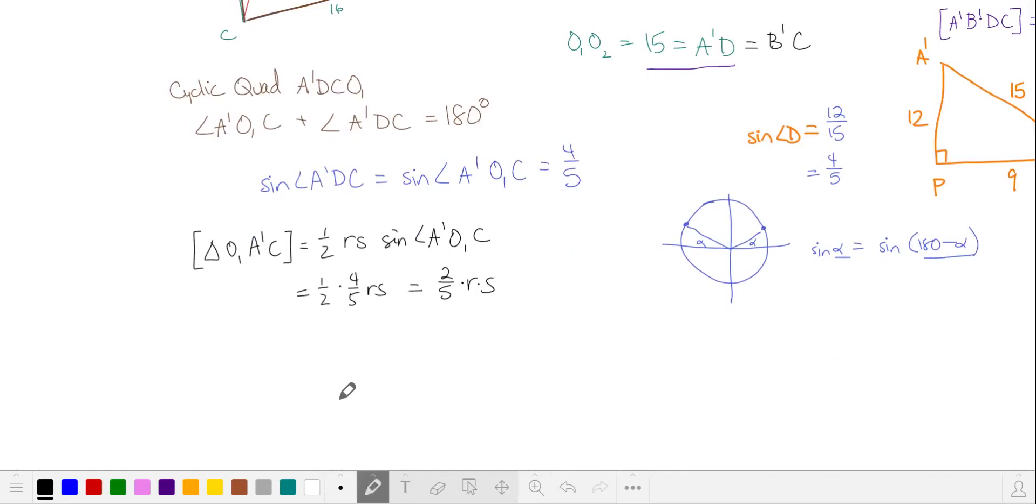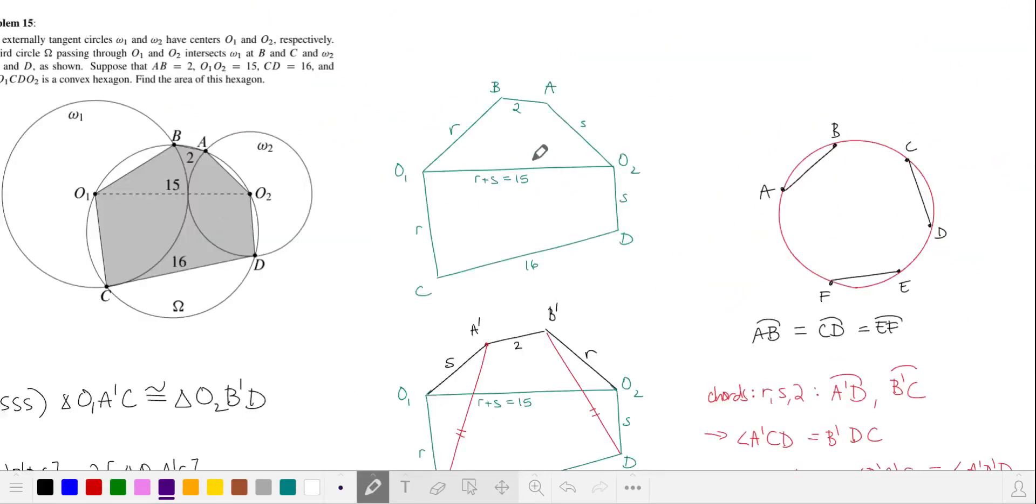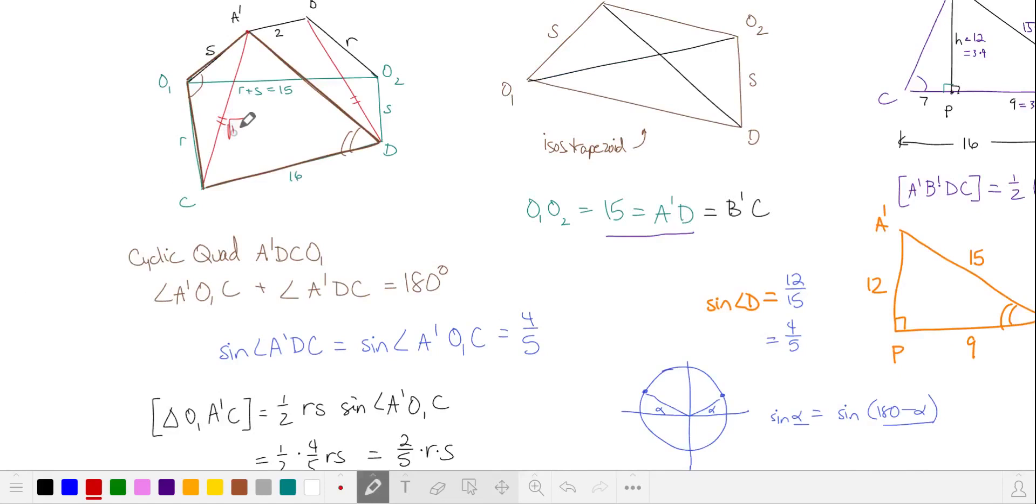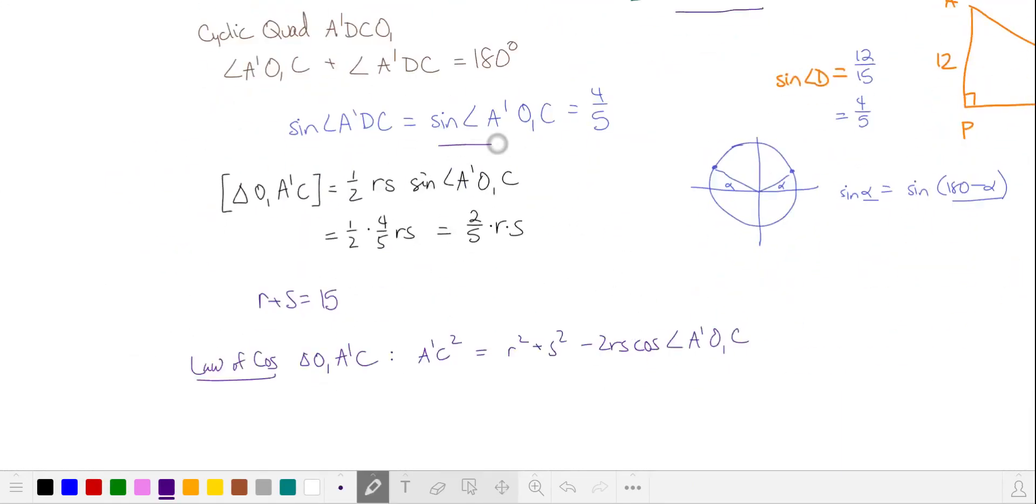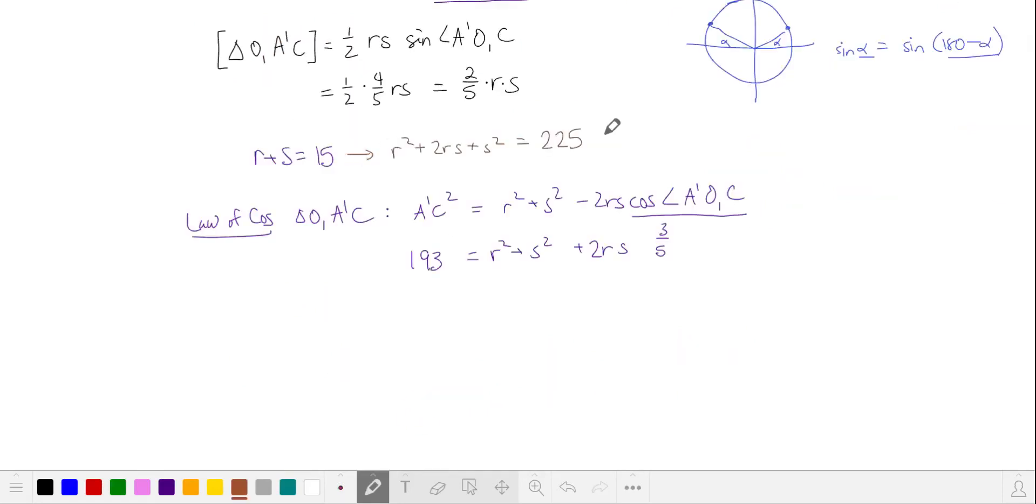Now we need to figure out what the product of R and S is. Returning to our original diagram, we have that the sum of the radii of our two circles, that are tangent, is equal to 15. We know the length of this third side is the square root of 193. So let's use the law of cosines on triangle O1, A prime, C. If the sine of this angle is 4 fifths, then the cosine is 3 fifths. But it's also an obtuse angle, so the cosine is actually negative. And the square of A prime C is 193. Let's square R plus S and solve for R squared plus S squared. We'll plug this in and solve for R times S, which is 40.